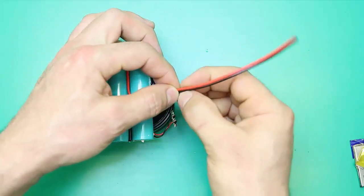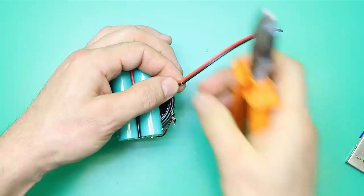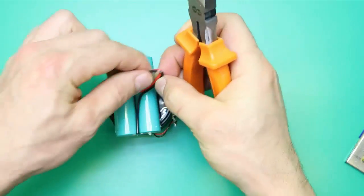Attention: when shortening the wires, because they are connected to the battery, we have to cut them one by one to avoid a short circuit.